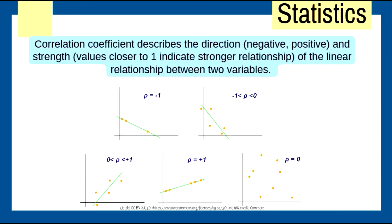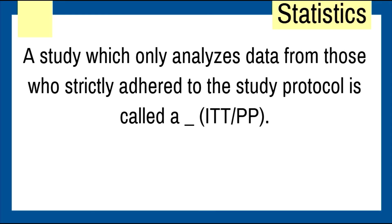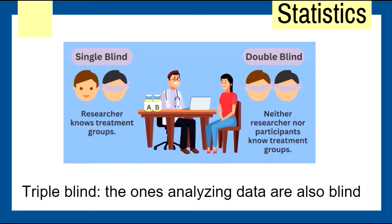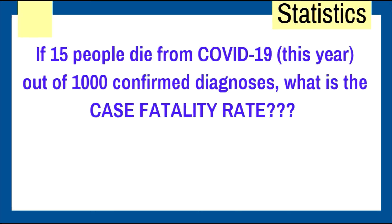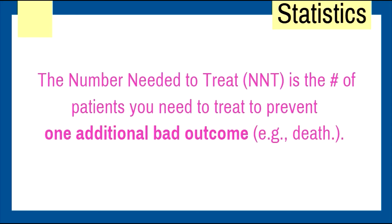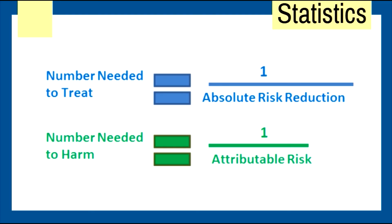Correlation coefficients describe direction — negative or positive — and strength. Values closer to 1 indicate stronger relationships; negative 1 indicates a negative correlation. The null hypothesis of a cohort study states relative risk equals 1, meaning no association. A per-protocol analysis only analyzes data from those who strictly adhere to the study protocol. Single blind, double blind, and in triple blind, those analyzing the data are also blind. Case fatality rate: 15 deaths out of 1,000 confirmed diagnoses equals 1.5%. Number needed to treat is patients needed to prevent one additional bad outcome; number needed to harm is patients treated before one is harmed.